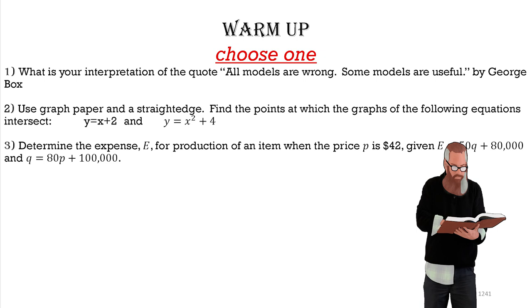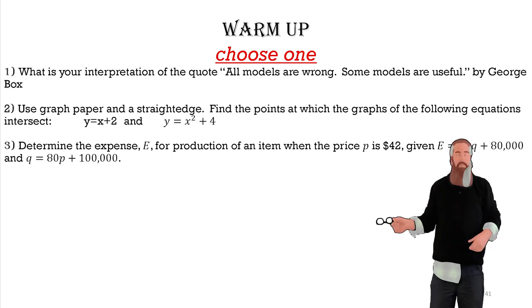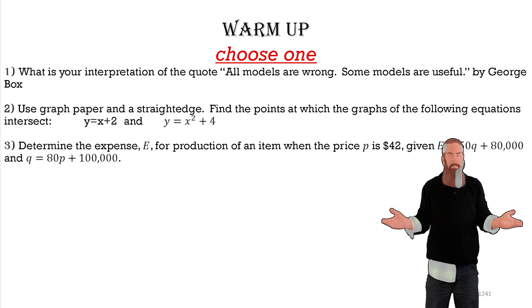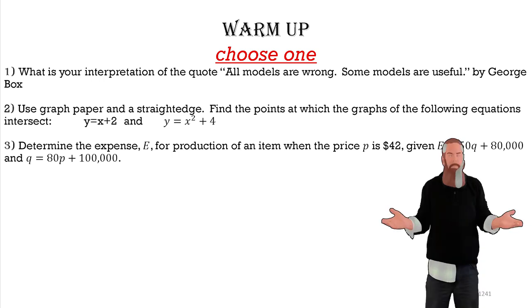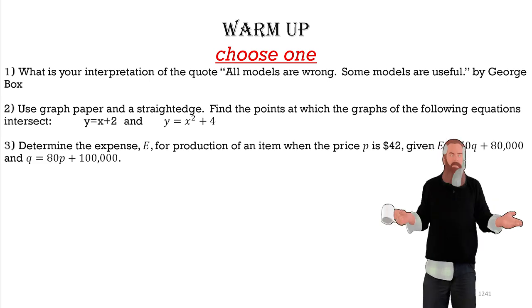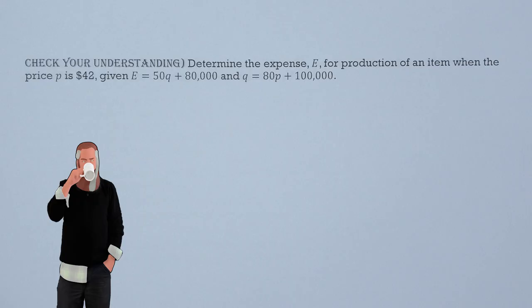Let's take a look at a problem you will be able to do by the end of this lesson. Let's check our understanding. Determine the expense E for the production of an item when the price P is given $42, given the E and Q equation.